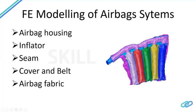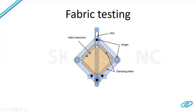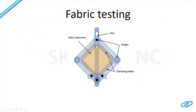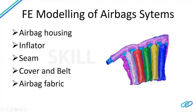In addition to the material curves, we also need to input the angle at which the threads are placed — for example, 90 degrees. Leakage is another critical parameter. More leakage leads to less acceleration and velocity on the dummy, so we need to correlate the leakage parameters to reduce velocity, displacement, and acceleration to match test results. This is how the airbag model is correlated.